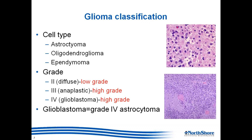Tumors are classified by the cells that make them up — astrocytomas, oligodendrogliomas, or ependymomas — and graded by microscopic features. A low-grade tumor has fewer cells; a glioblastoma shows bizarre-looking cells that don't normally exist in the brain, along with sheets of necrosis where the tumor is outgrowing its blood supply. Tumors are graded two, three, and four. Glioblastoma is the same as a grade four astrocytoma.